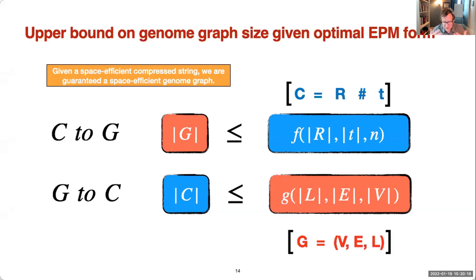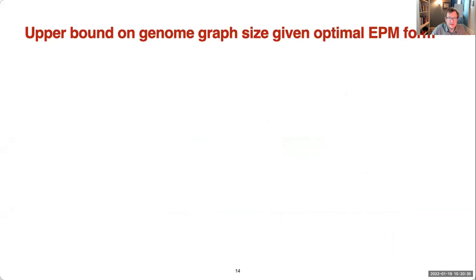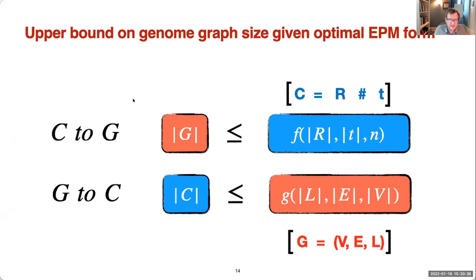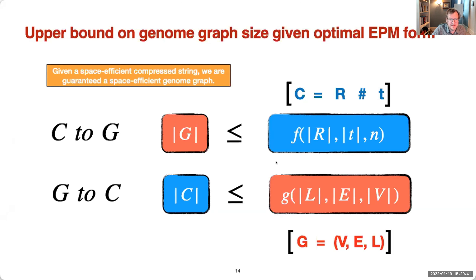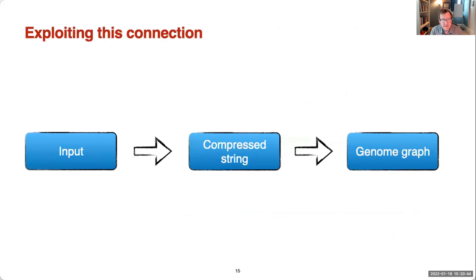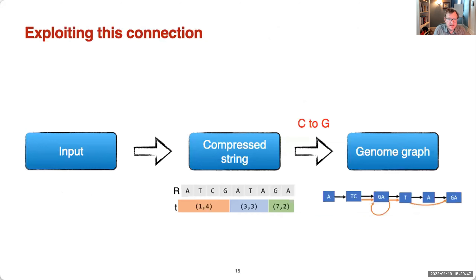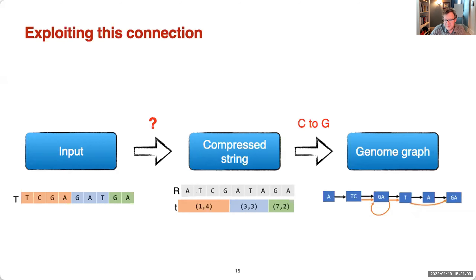This gives a really nice relationship: if we can find a space-efficient compressed string in EPM form, we are guaranteed a space-efficient genome graph — though not necessarily an optimal one. So our approach is to create a genome graph by first going through an EPM compression scheme and then using the C-to-G algorithm. The question is which EPM method to use. The algorithm works for any EPM compression algorithm, but a natural choice in this context is relative Lempel-Ziv. The minimization problem for EPM in general is NP-hard, but relative Lempel-Ziv runs in linear time.